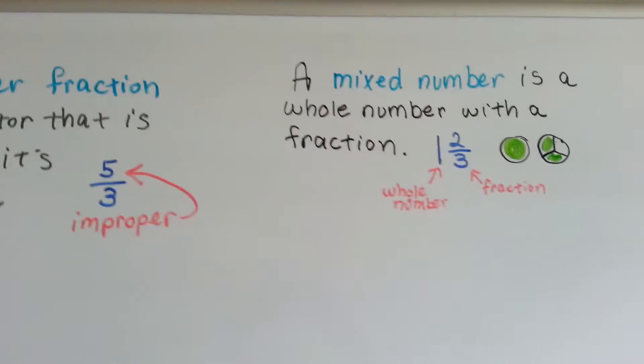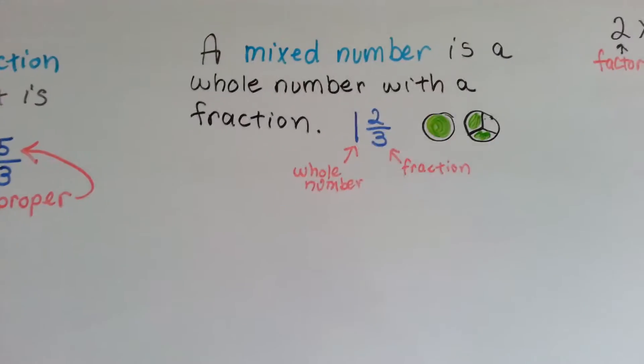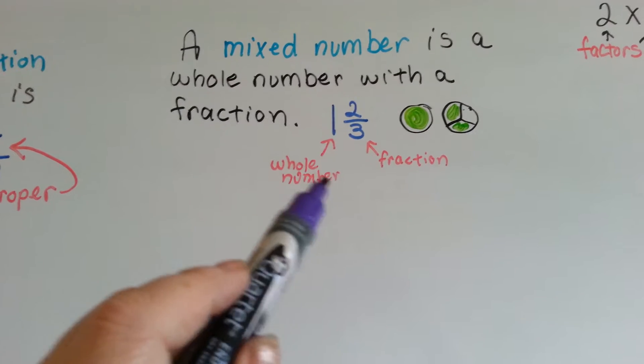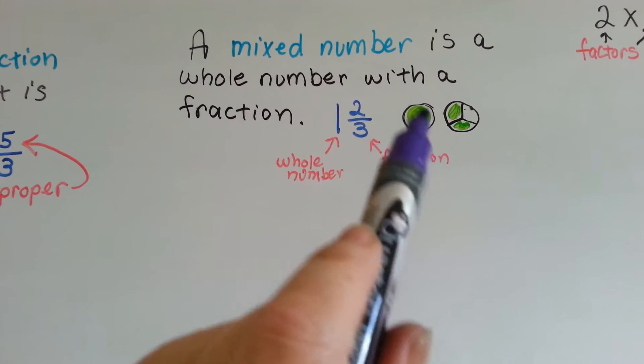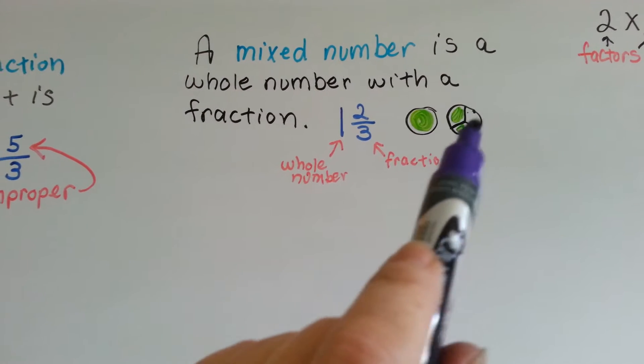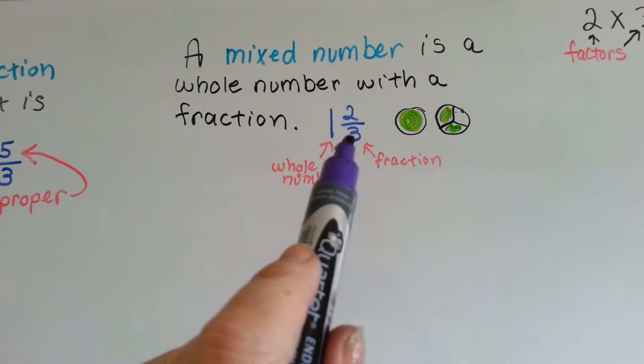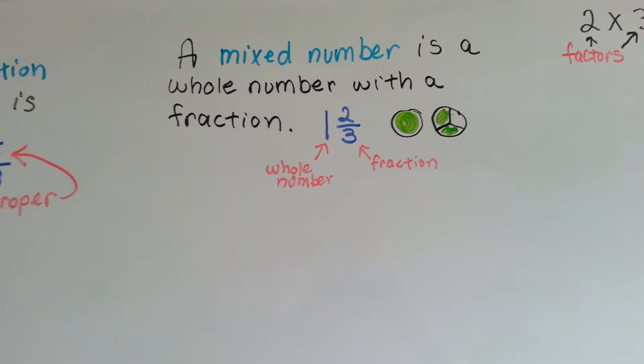A mixed number is a whole number with a fraction. One and two-thirds is a whole number one with a fraction of two-thirds, which represents a whole one, and then something split into three parts, denominator three, and you have two of them.